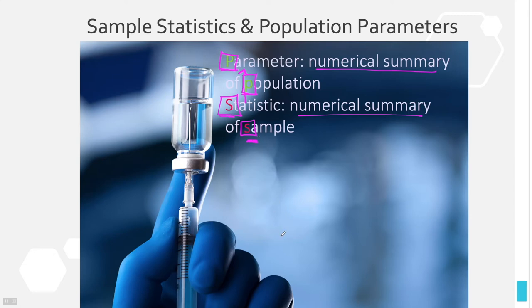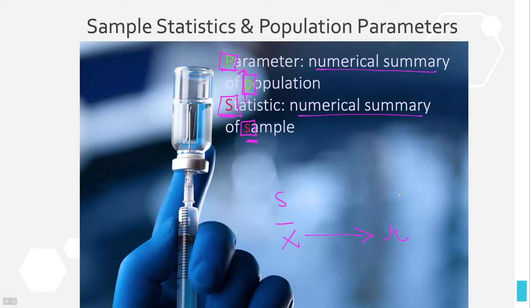An example of a statistic or numerical summary might be the mean — specifically the sample mean, which we call x-bar (X with a bar on top). That represents the sample mean. The population mean is represented by mu (a curvy M or curvy U). Our sample mean estimates the population mean — our statistic estimates our population parameter.